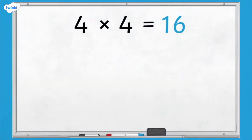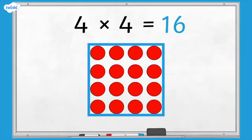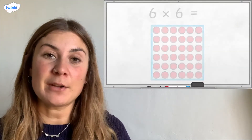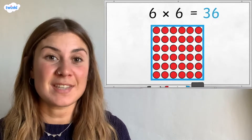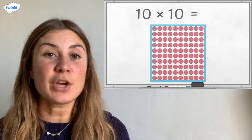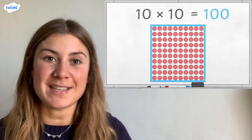If we use counters to make an array showing 4 rows of 4, we can see why it's called a square number. Some other examples of square numbers are 36, which is 6 multiplied by itself, and 100, which is 10 multiplied by itself.